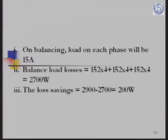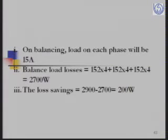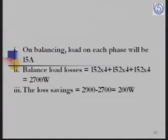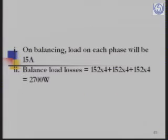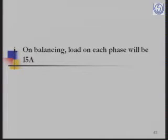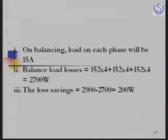Now with a balanced load of 15 A on all three phases — the average of 10, 15, and 20 — the balanced losses will be 15² × 4 + 15² × 4 + 15² × 4, which works out to 2700 W. The loss saving is 200 W. Additionally there will be current in the neutral under unbalanced conditions, so the actual saving from balancing would be around 300 W or more.